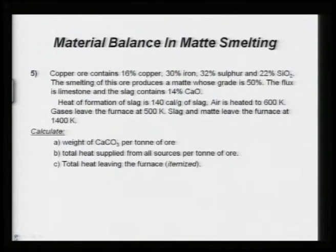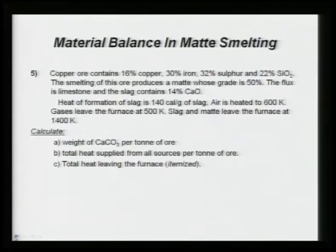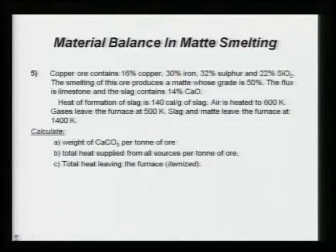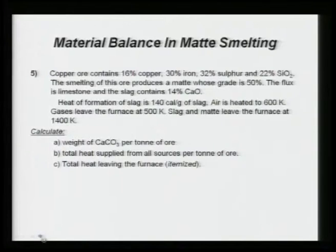The next problem, Problem 5: copper ore contains 16 percent copper, 30 percent iron, and so on. The smelting produces a matte whose grade is given. The flux is limestone and slag contains 14 percent CaO. Various heat data are also given — heat of formation accompanies slag formation — and the temperatures at which products leave are also given. You must calculate calcium carbonate, total heat supplied, and total heat leaving the furnace.